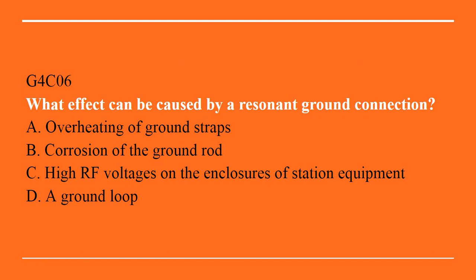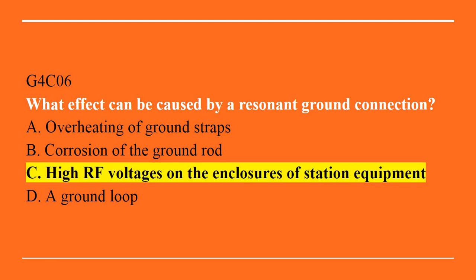G4C06: What effect can be caused by a resonant ground connection? A. Overheating of ground straps. B. Corrosion of the ground rod. C. High RF voltages on the enclosures of station equipment. D. A ground loop. The correct answer is C. High RF voltages on the enclosures of station equipment.